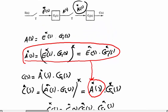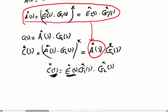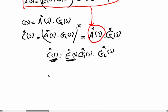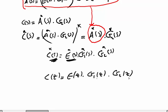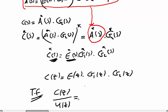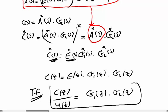E*(s) is the input and C*(s) is the output. If we take the Z-transform now, C(z) would be equal to E(z) times G1(z) times G2(z). So the transfer function in digital form will be C(z) over E(z), which equals G1(z) times G2(z).